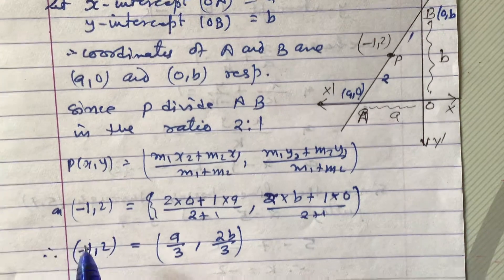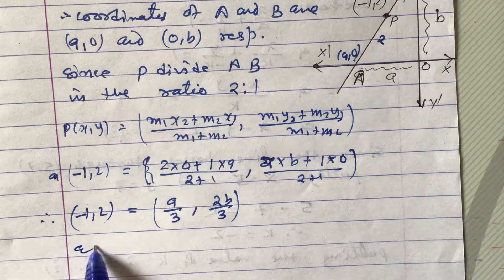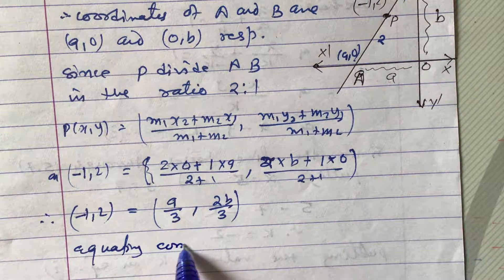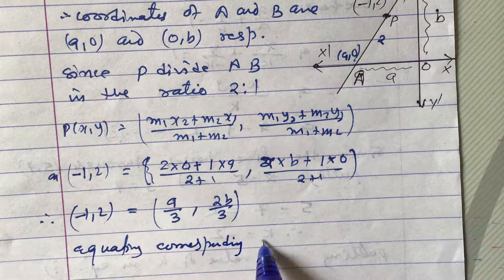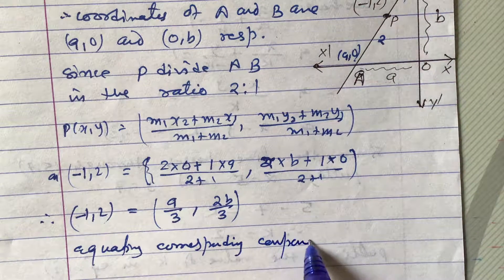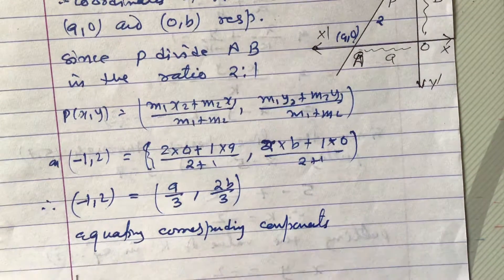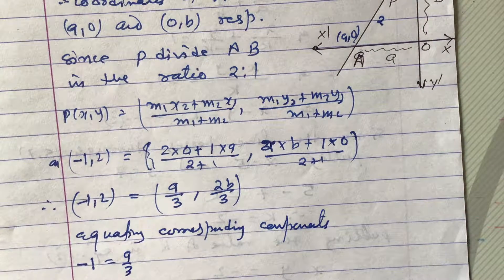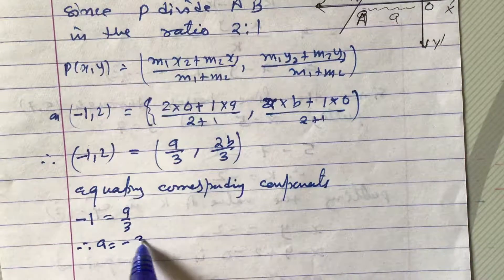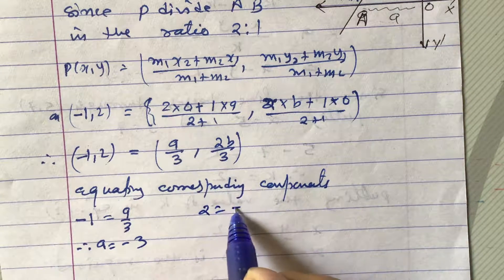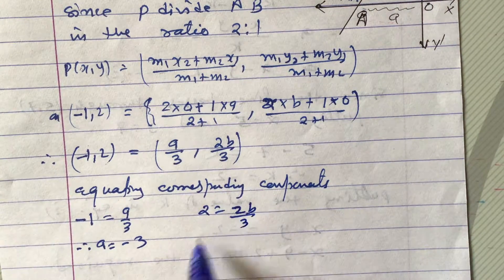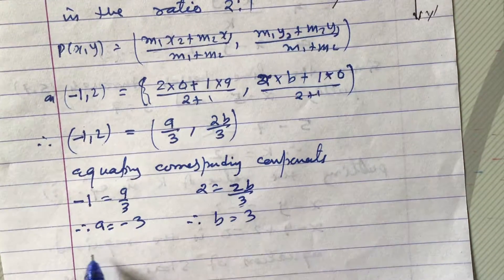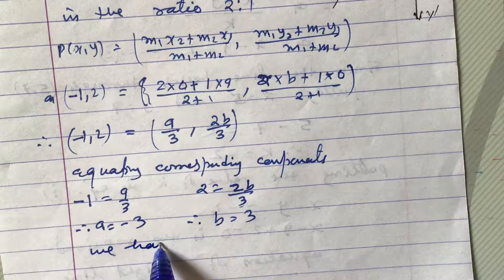Equating corresponding components: minus 1 equals a by 3, therefore a equals minus 3. And 2 equals 2b by 3, therefore b equals 3.